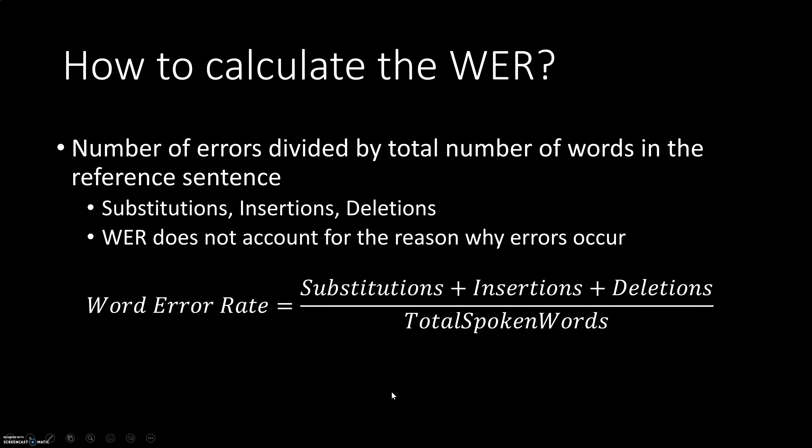Now let's extend this to WER. WER works the same way as Levenshtein's distance. The difference is that here we compare word by word rather than letter by letter. We have two sentences: one is the reference sentence, which is the spoken sentence, and then we have the output of the ASR system. We align these two sentences and then look for differences — mainly whether there are any substitutions, insertions, or deletions of words. We add up all these different kinds of errors, divide that by the total number of spoken words, and what we get is our word error rate.